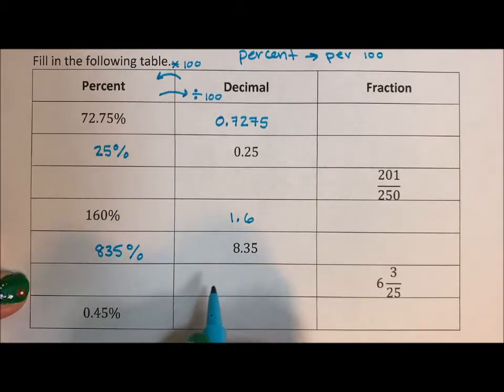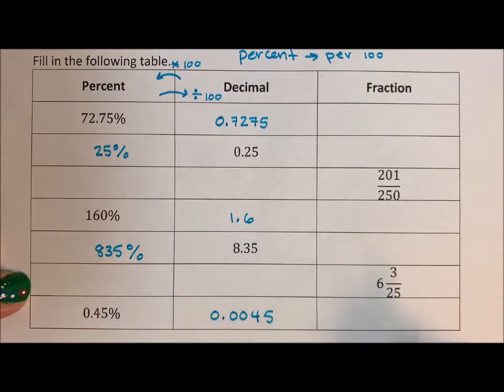Nothing is here. And this is the one that always trips students up because they don't want the decimal to be even smaller. But we are dividing. So we have 0.0045.